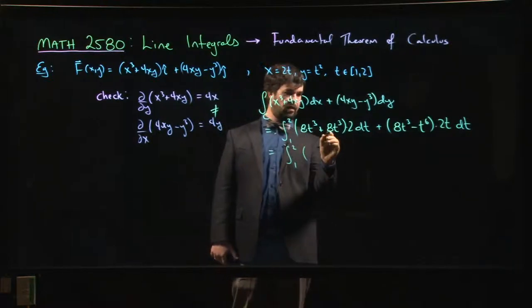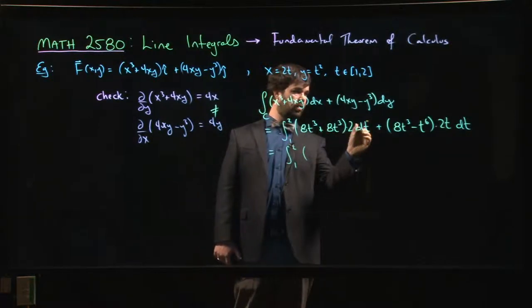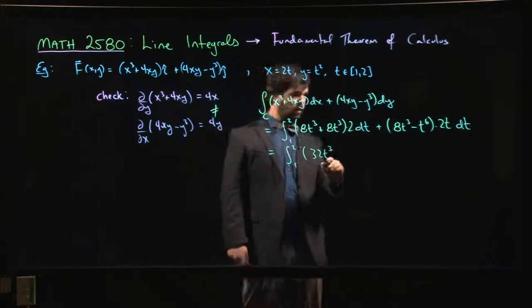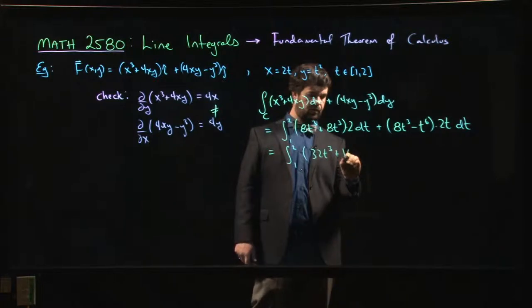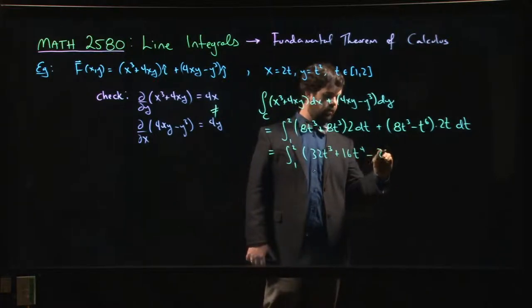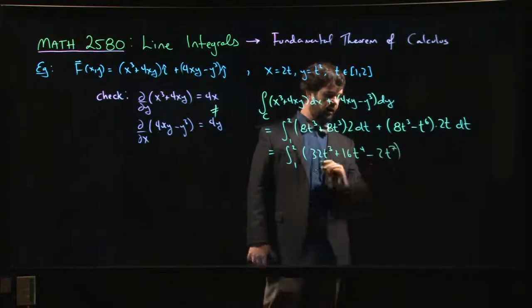And so you've got to do the integral from 1 to 2 of—let's see, so that's 8, so 16, 32—32t cubed plus 16t to the 4 minus 2t to the 7.